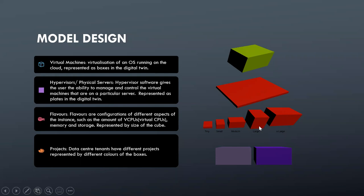As you can see here, there are x-large, large, medium, small, and tiny flavors. These represent different flavors. The height of each flavor represents the memory, and the base of each flavor represents the vCPUs. So this tiny, which has a small base, would represent fewer vCPUs compared to this large, which has a larger base and a larger height, representing more memory and more vCPUs.